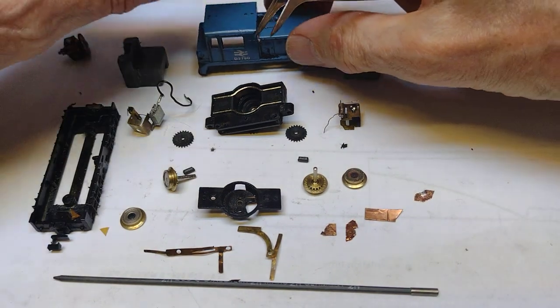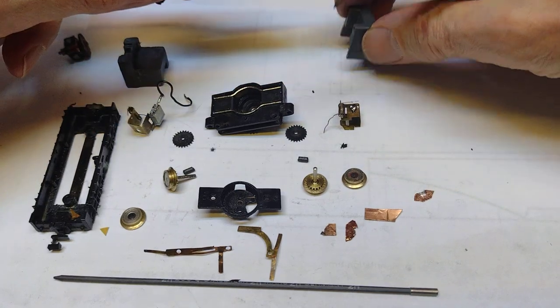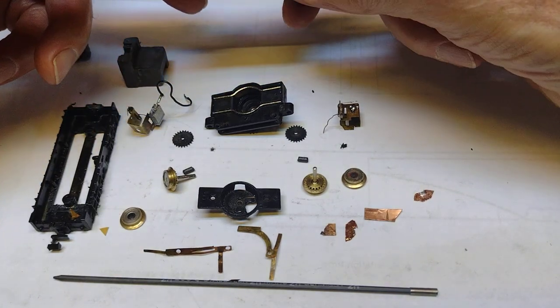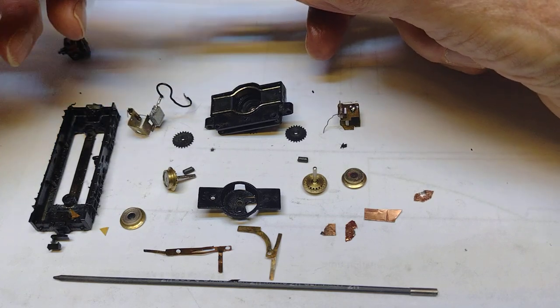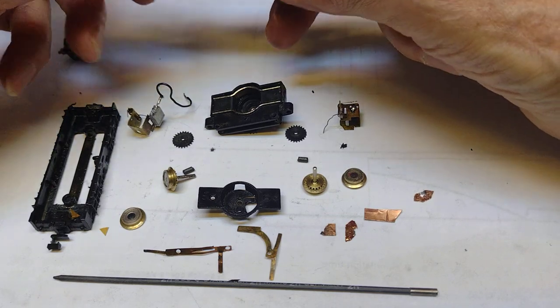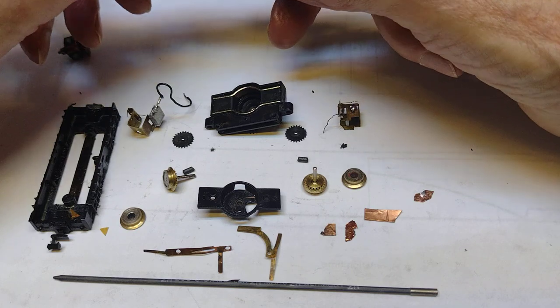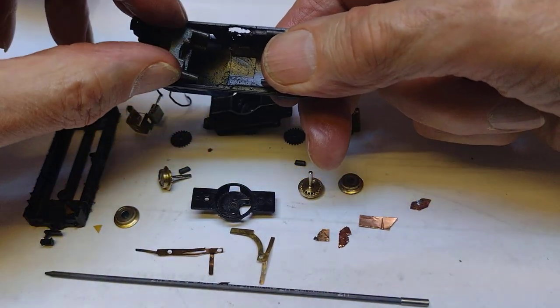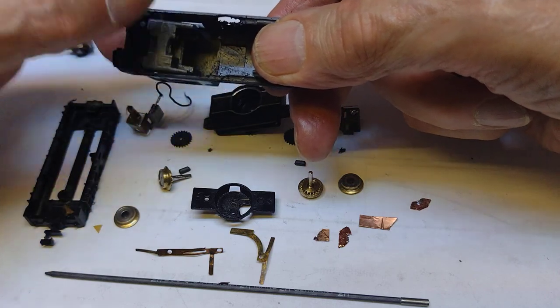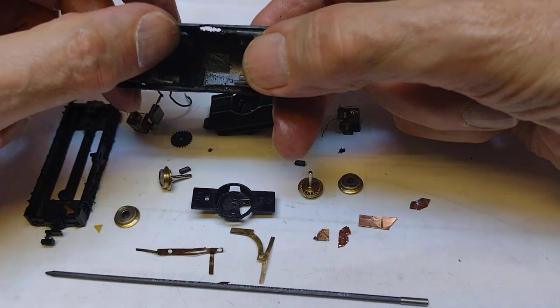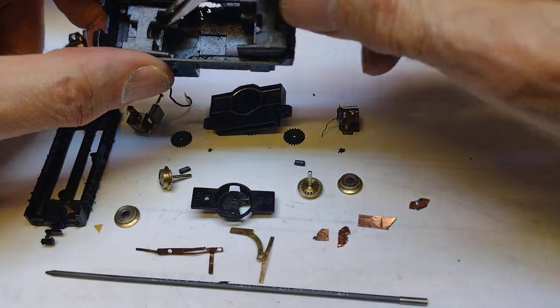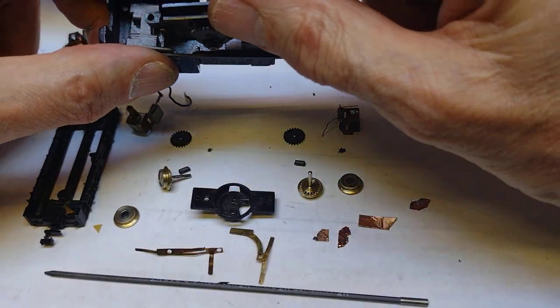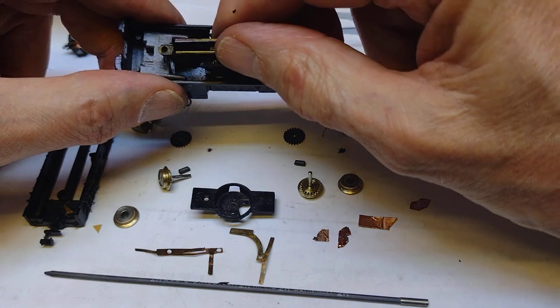So how did the engine go back together? Well, what we have is the body of the engine. It has two big heavy weights that go in, one at that end and one at this end. Between them is a slot so that the motor itself can slot in between the two weights.